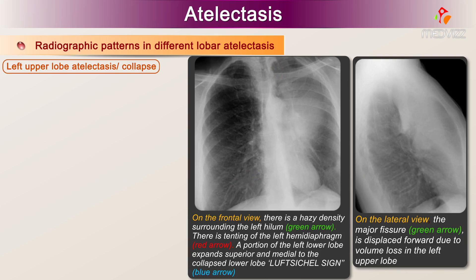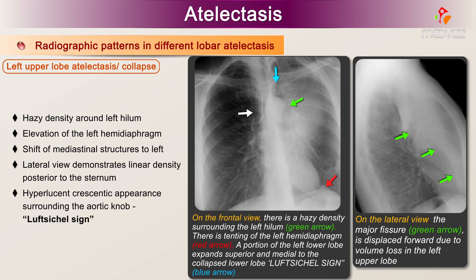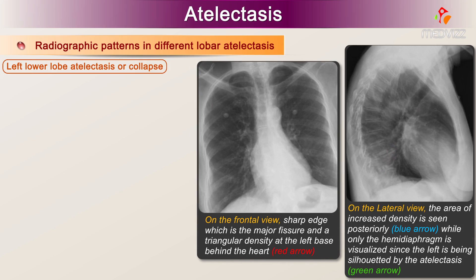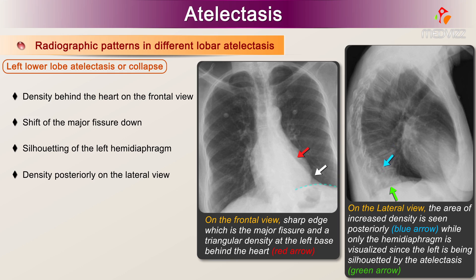4. Left upper lobe atelectasis or collapse: hazy density around the left hilum, elevation of the left hemidiaphragm, shift of mediastinal structures to the left, and the lateral view demonstrates linear density posterior to the sternum. A hyperlucent crescent-shaped appearance surrounding the aortic knob is termed the Luftsichel sign, due to compensatory hyperexpansion of the left lower lobe. 5. Left lower lobe atelectasis or collapse: density behind the heart on the frontal view, shift of the major fissure down, silhouetting of the left hemidiaphragm, and density posteriorly on the lateral view.